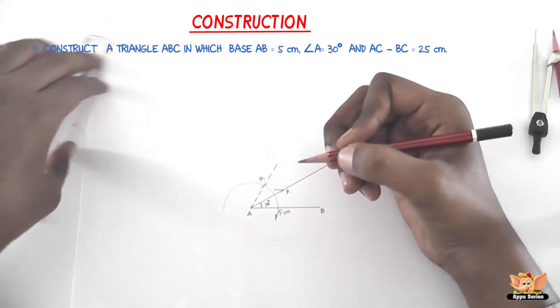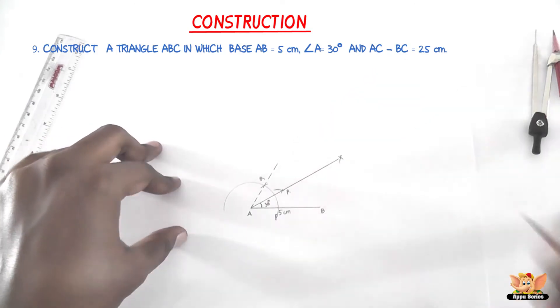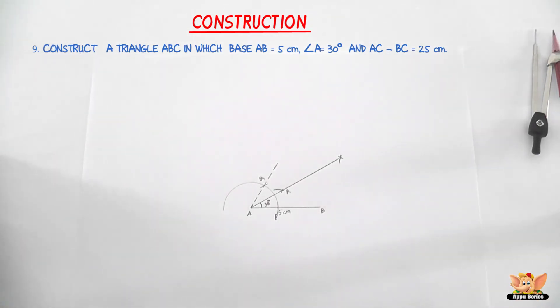So we've done two things. We've got the base as 5 cm and we've constructed a base angle A which is equal to 30 degrees.